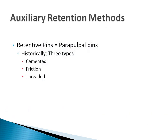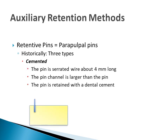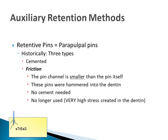Dentistry has used three types of parapulpal pins: cemented, friction retained, and threaded. With cemented pins, the pin channel diameter is larger than the pin diameter. The pin is retained with dental cement. The pin is serrated and about 4 mm in length — 2 mm is within the dentin, and 2 mm is within the restorative material. In friction retained pins, the pin channel is smaller than the pin. These pins are hammered into the dentin. Friction retained pins are no longer used, as the stress levels created possibly leading to tooth fracture are very high.